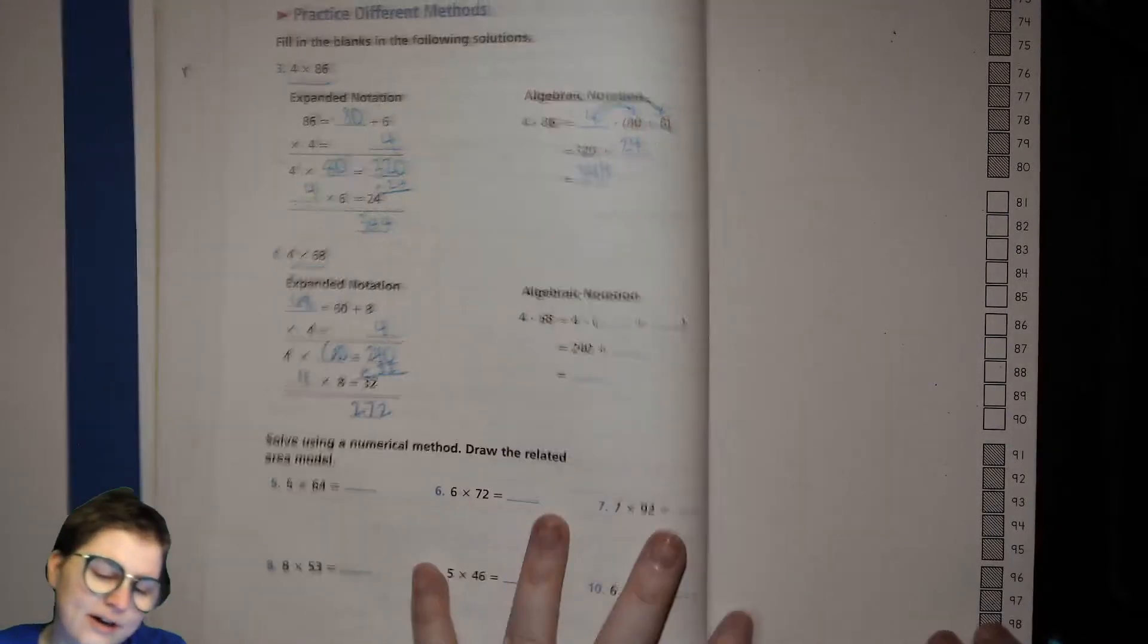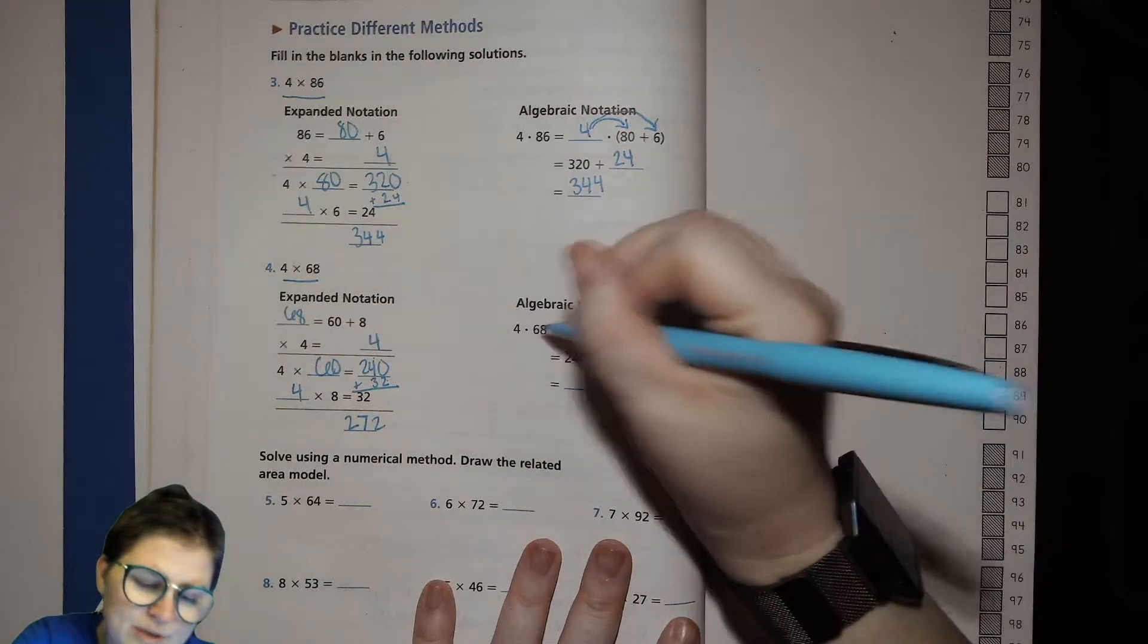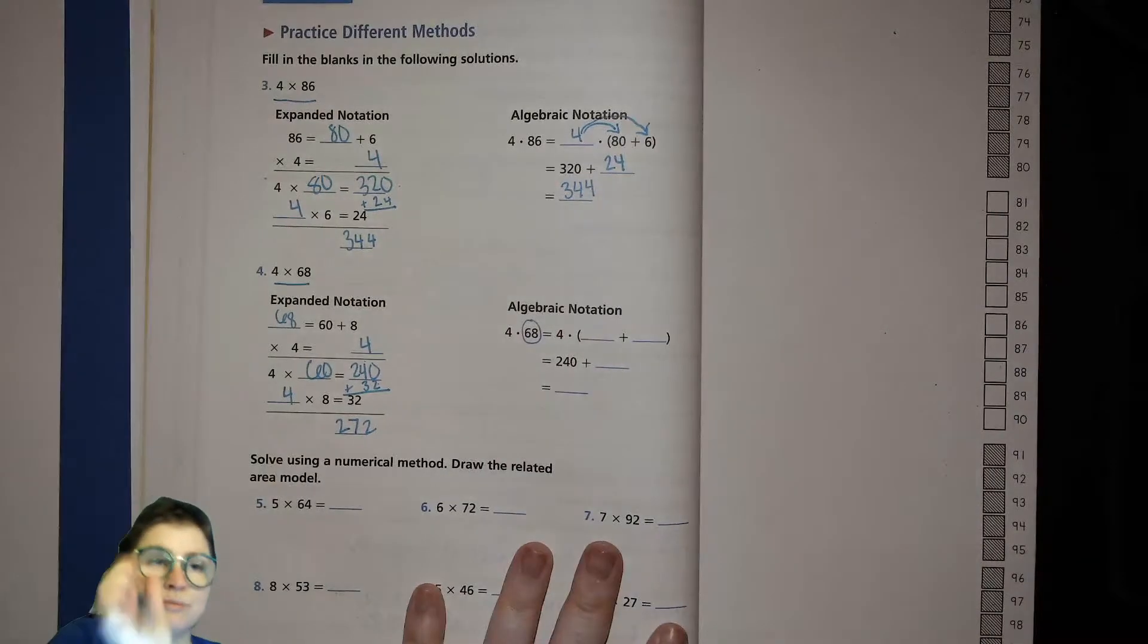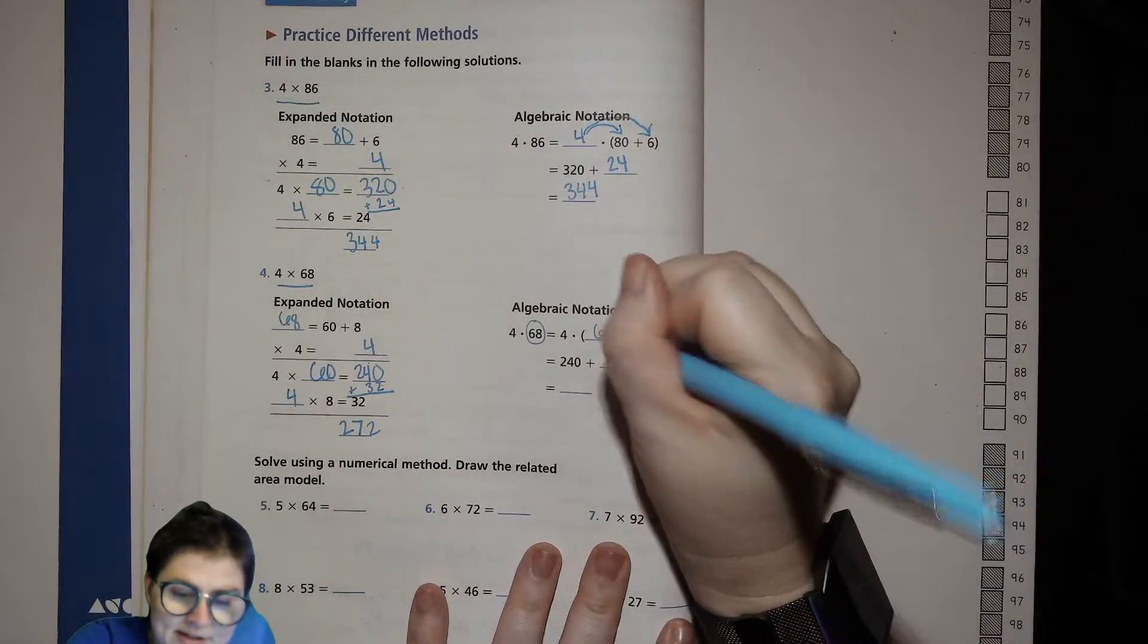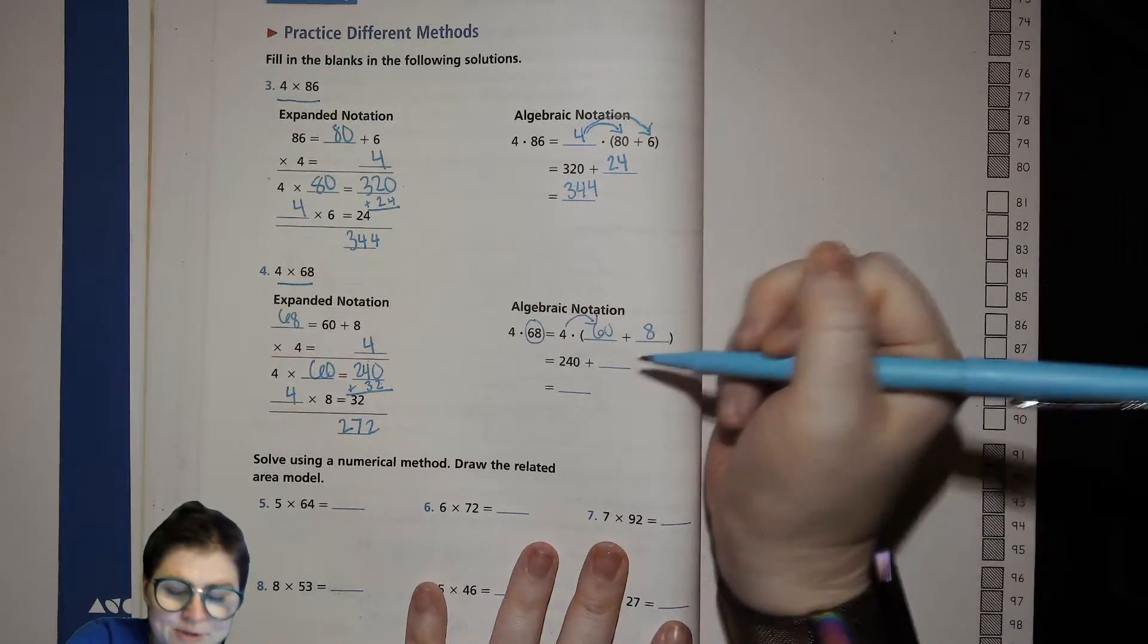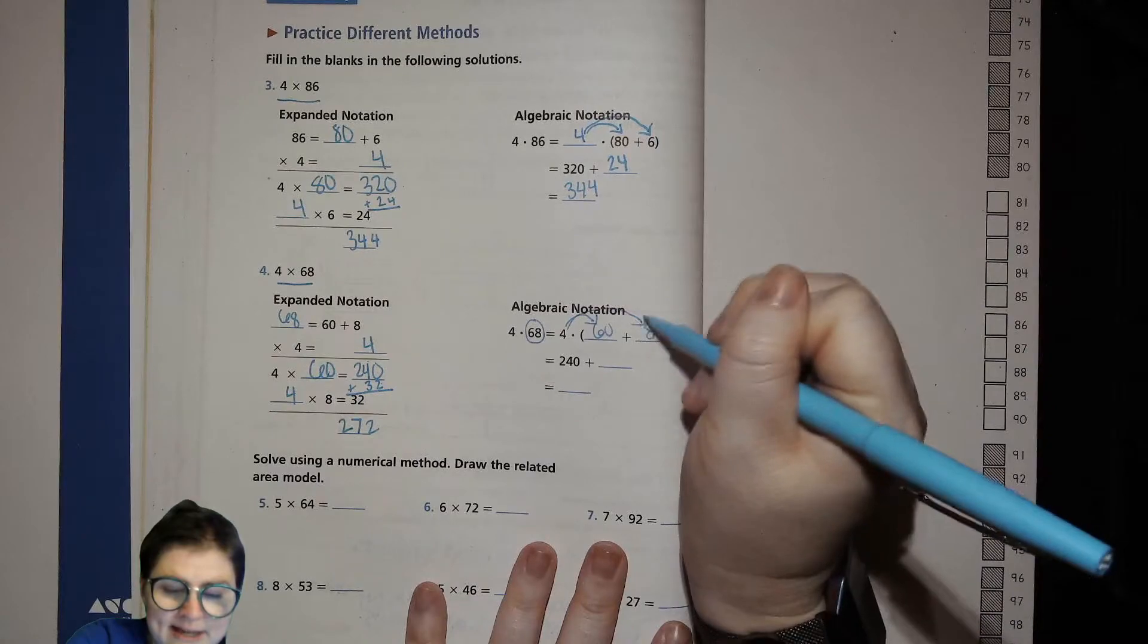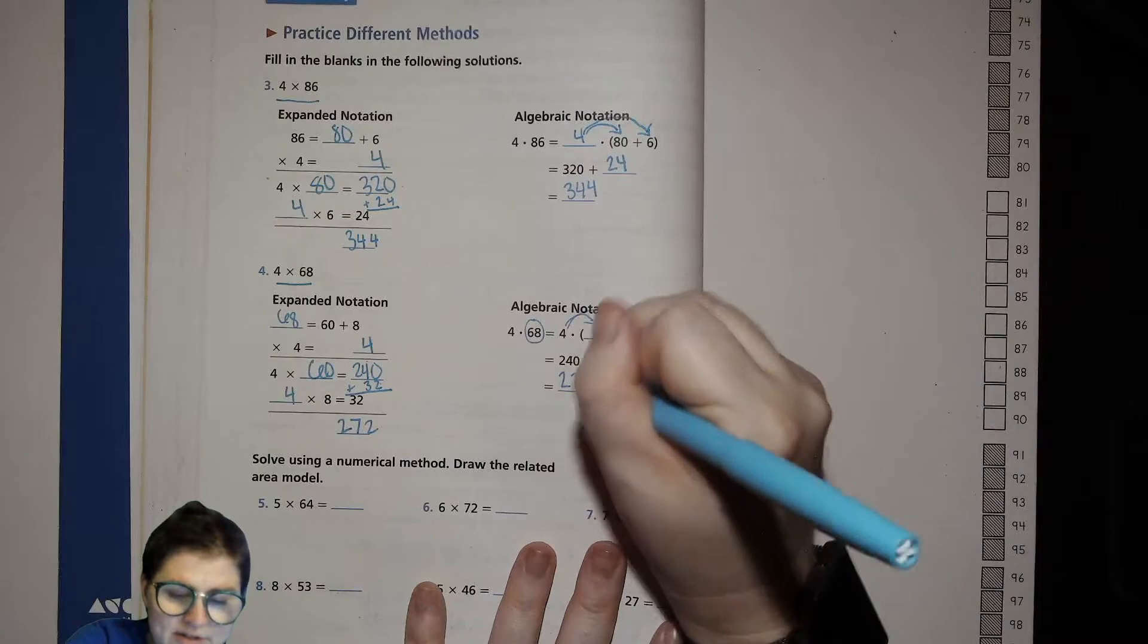And then over here, our algebraic notation, we have the same thing. We're just breaking the 68 into place value chunks like expanded form. So 60 plus 8. 4 times 60 is 240. 4 times 8 is 32. Add them up, 272.